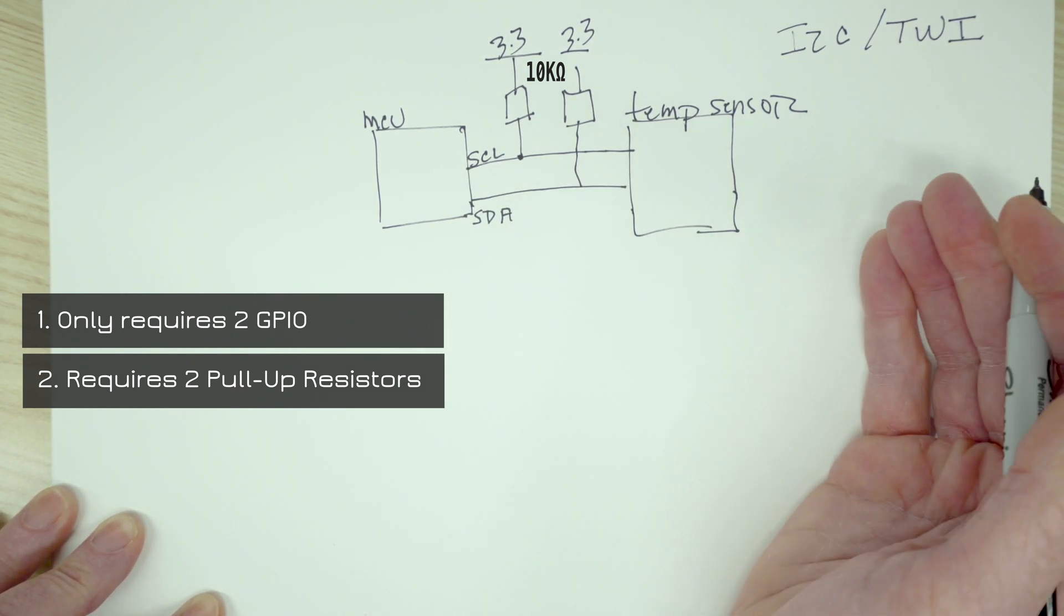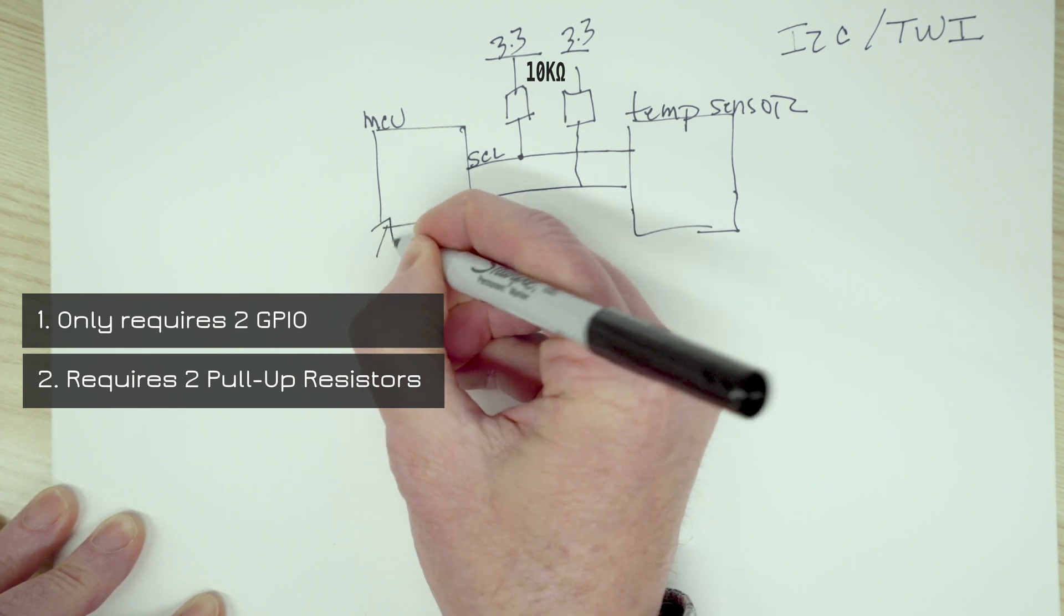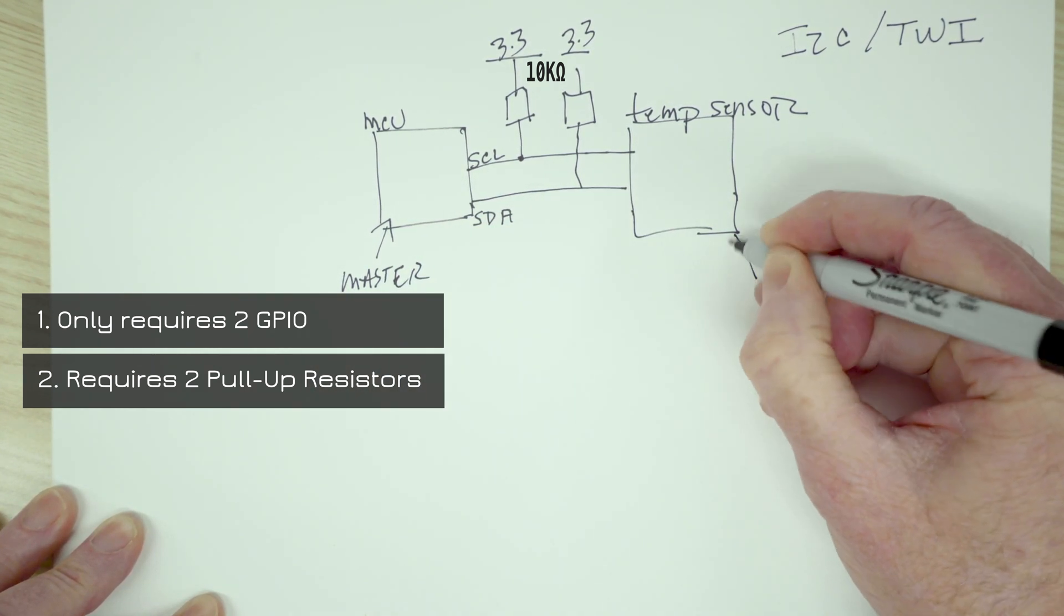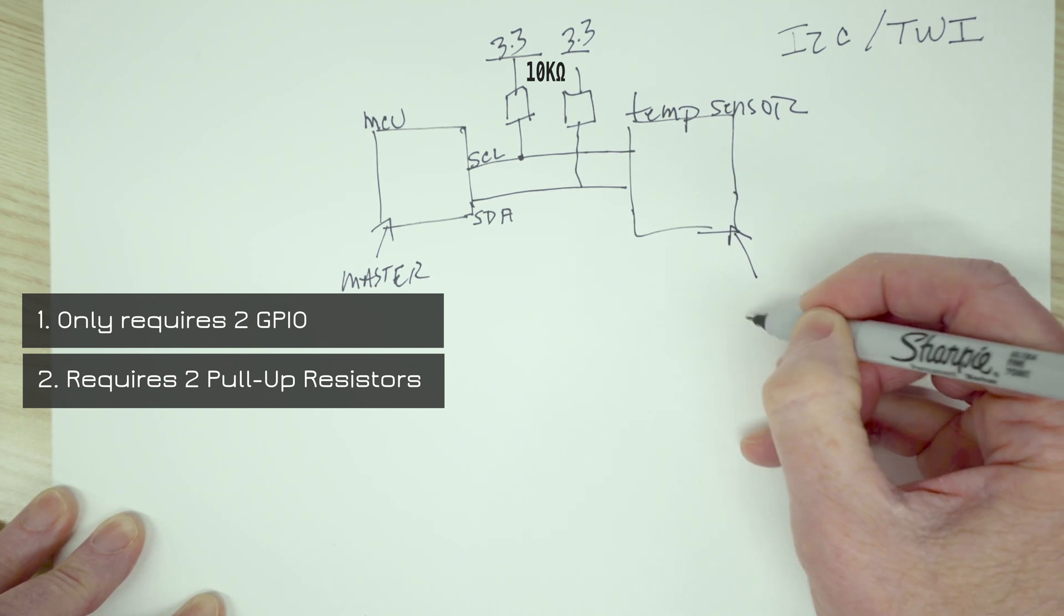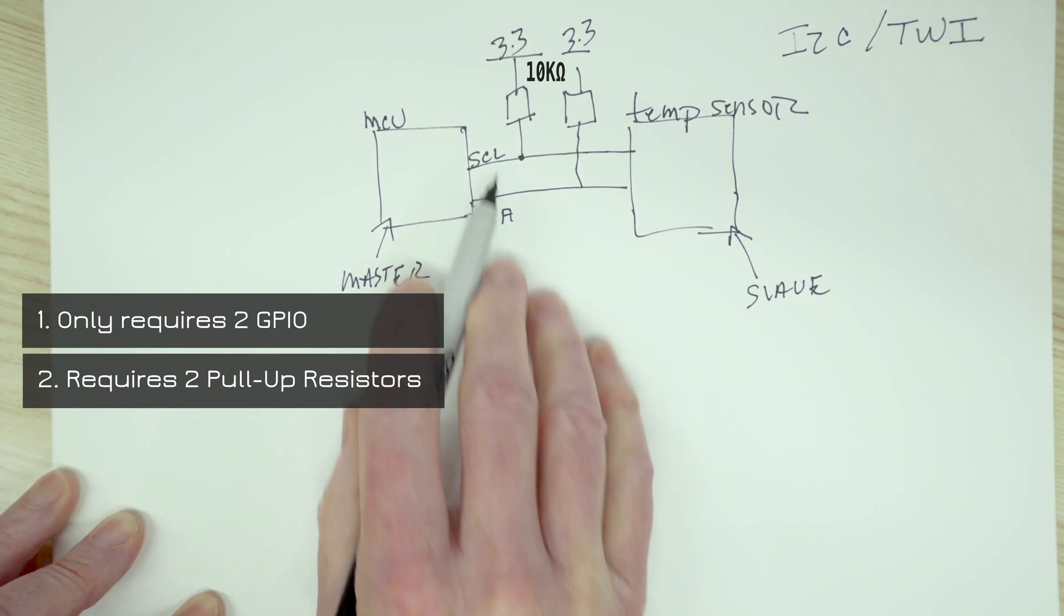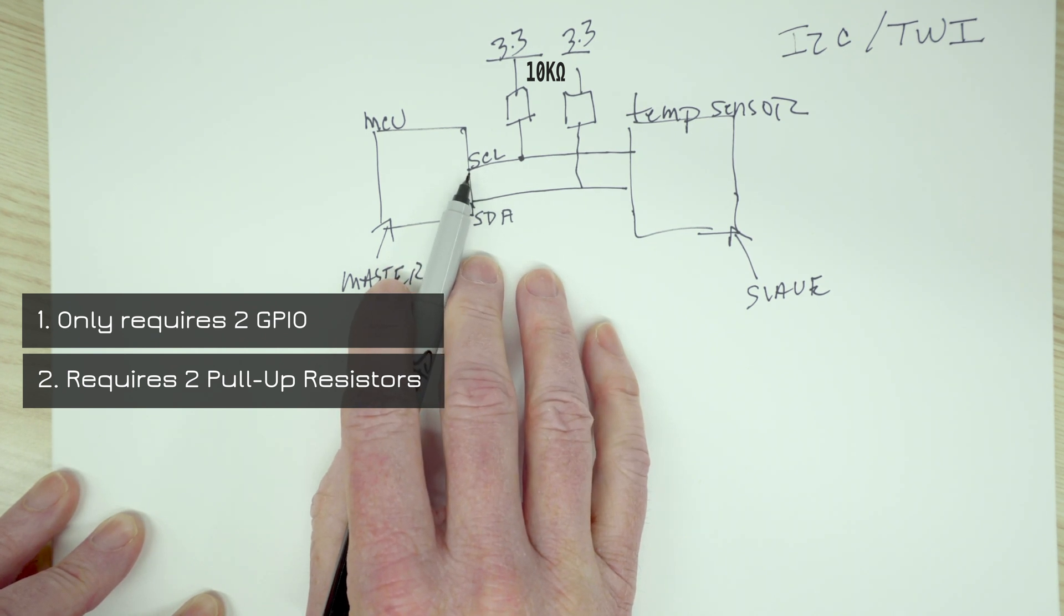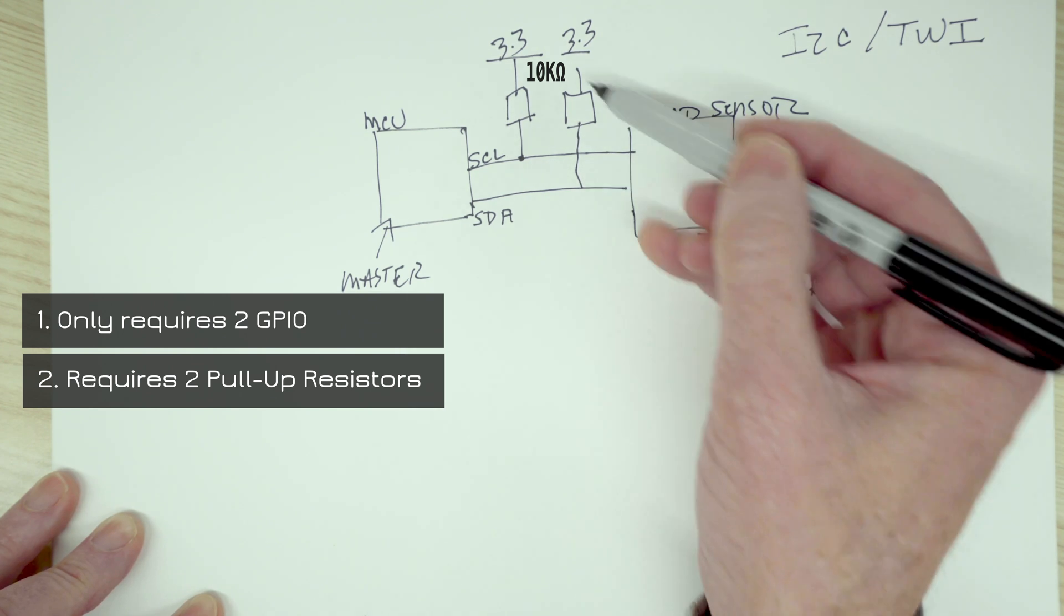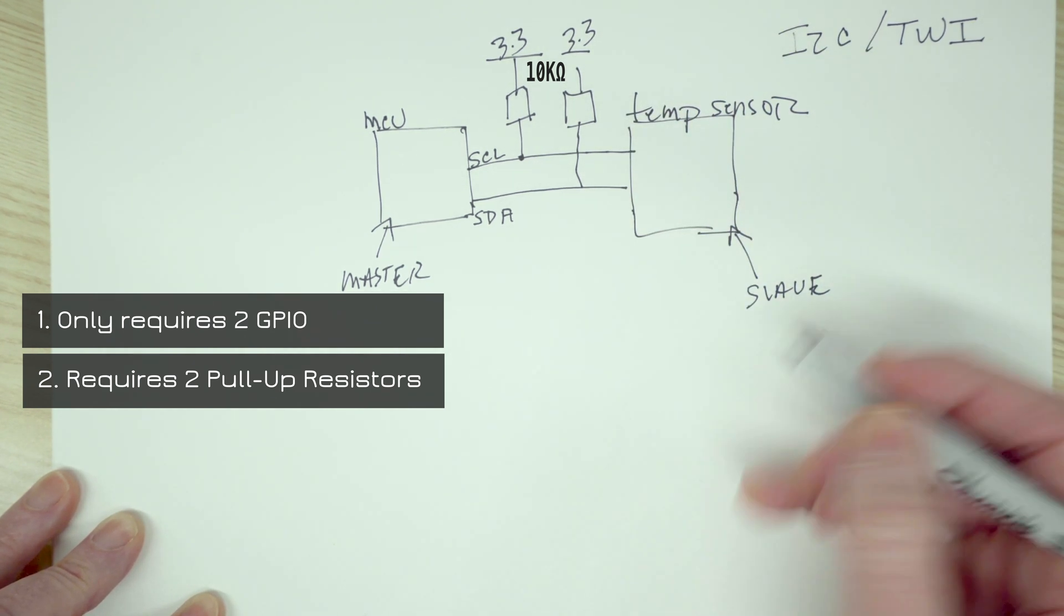They're not pulled low or high normally unless we're communicating. And when we are, typically the MCU will be the master and the temperature sensor or other sensors will be the slave. So when they're ready to communicate, they'll actually pull the line low and then whenever they want the line to be high, they just release the line and the pull-up resistors do the work of bringing it high.